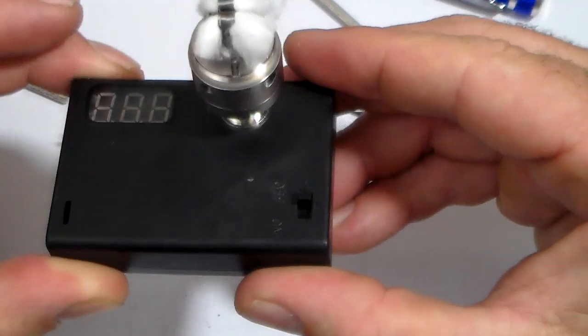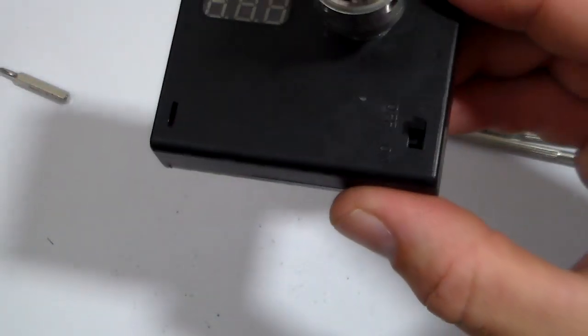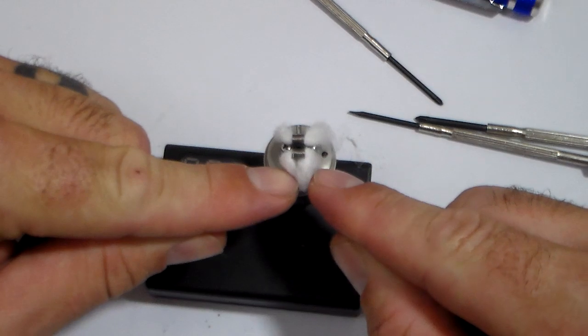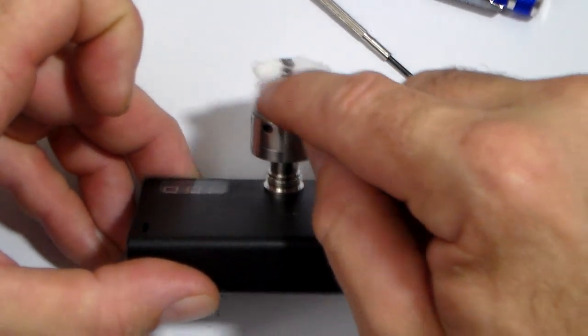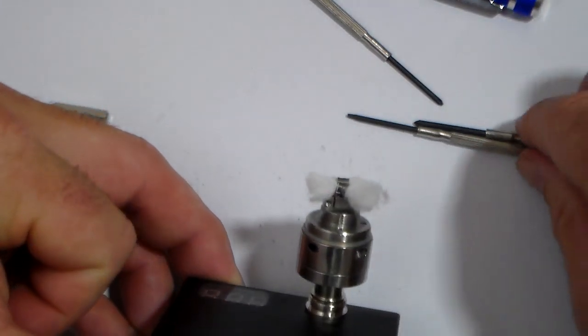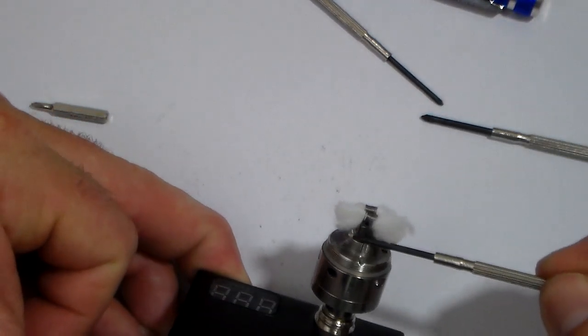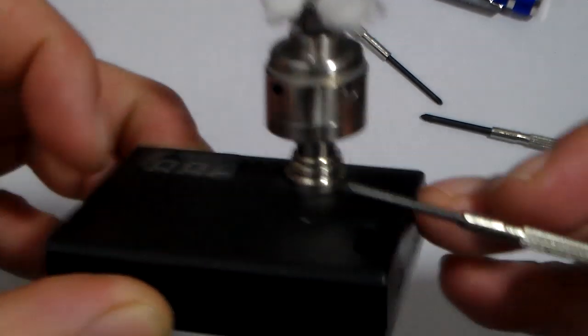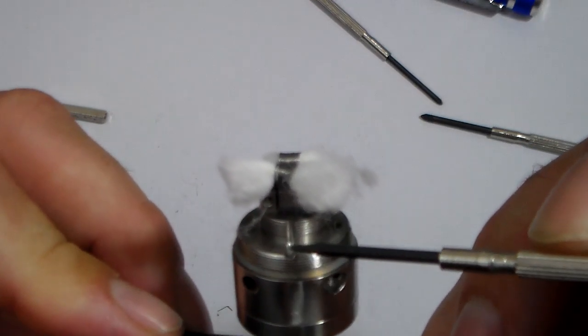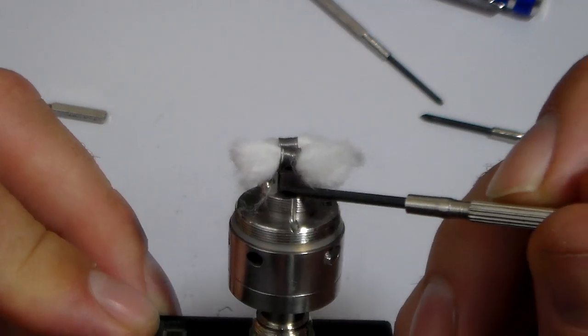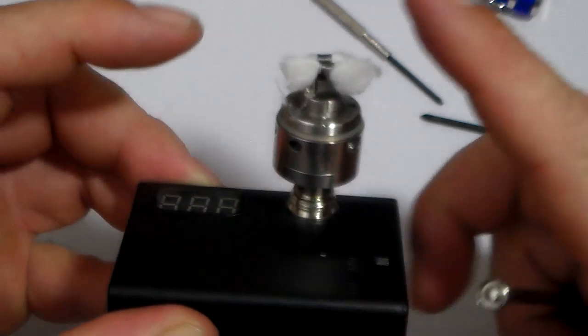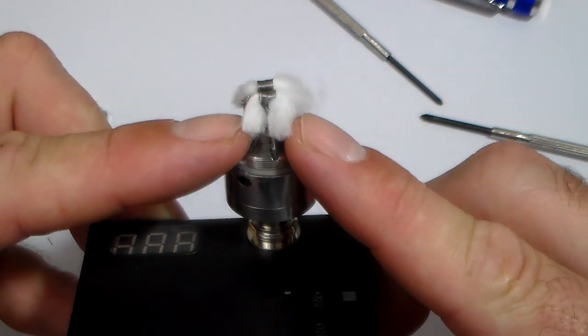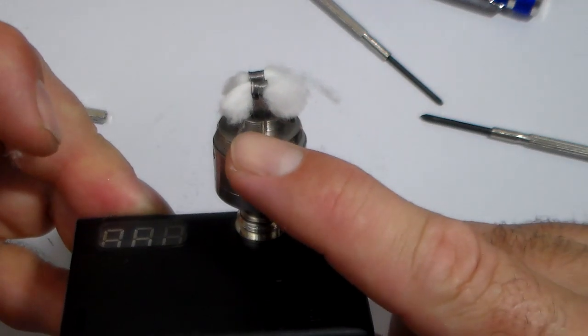And it does help to pull that cotton down and hold it down, and then just run your scissors, like I said, let me show you guys here. You want your cotton even with this deck right there. And it does help to pull both of them down and then just run your scissors along that to cut it.